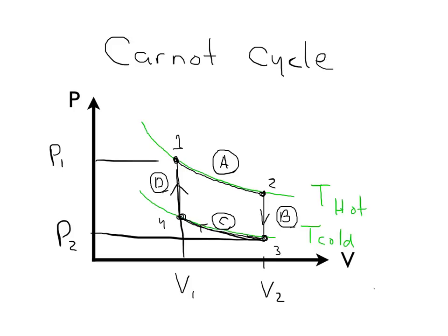Now we can work out how much work has been done and how much heat goes in and out. Let's talk about the heat issue first. Through cycle A, our isothermal process, we are keeping a constant hot temperature as we're increasing the volume. Going back to the ideal gas law PV = nRT, as you increase the volume, you're going to have to put energy into the system to keep this working. So you're going to have to put heat in as we move clockwise — moving from Point 1 to Point 2. We're going to go clockwise for the whole thing.